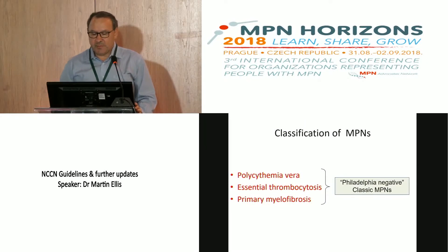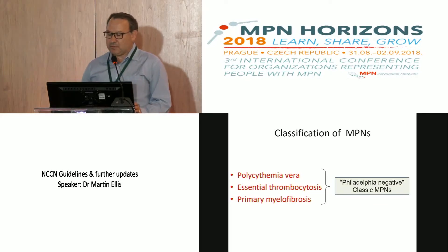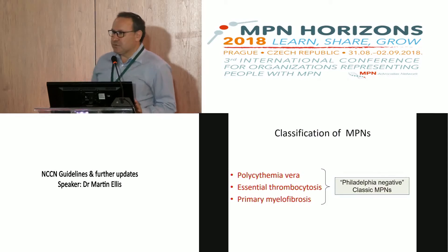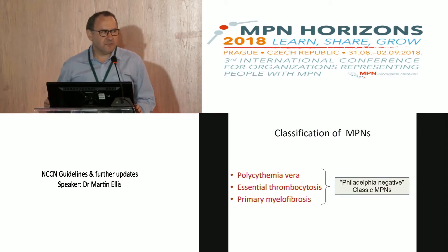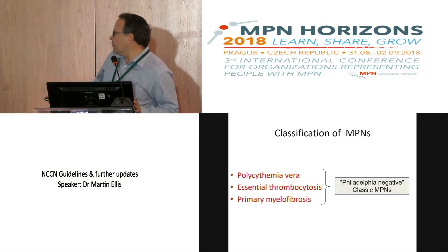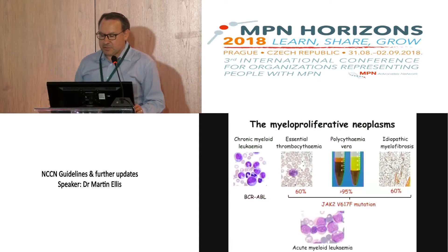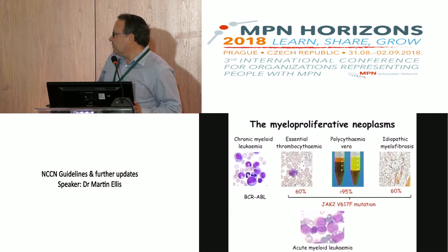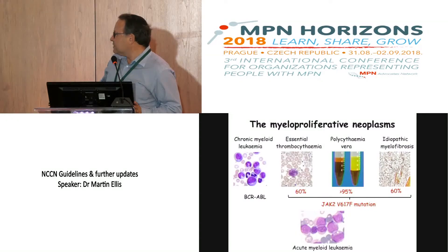The myeloproliferative neoplasms form part of the myeloid diseases. We're talking about the so-called Philadelphia-negative — excluding chronic myeloid leukemia — classic myeloproliferative neoplasms. This excludes non-classic MPNs such as eosinophilic disorders and mast cell disorders. This term represents three diseases: polycythemia vera, essential thrombocytosis or thrombocythemia, and primary myelofibrosis. This slide shows the classic MPNs — ET, PV, and MF — in the broader context of myeloid neoplasms, including CML and acute myeloid leukemia, which may develop out of one of these chronic myeloproliferative neoplasms.